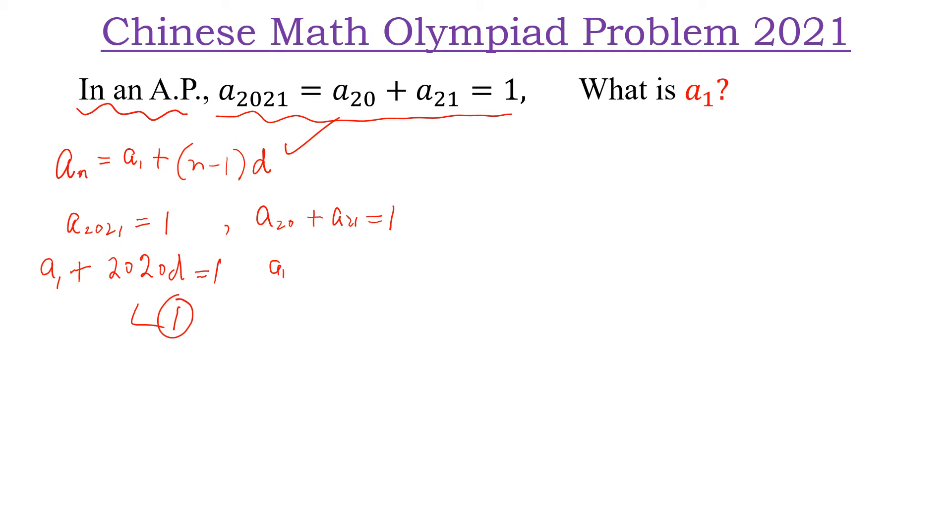Here we can write A₁ plus 19D plus A₁ plus 20D is equal to 1. Simplify this. We can write 2A₁ plus 39D is equal to 1.